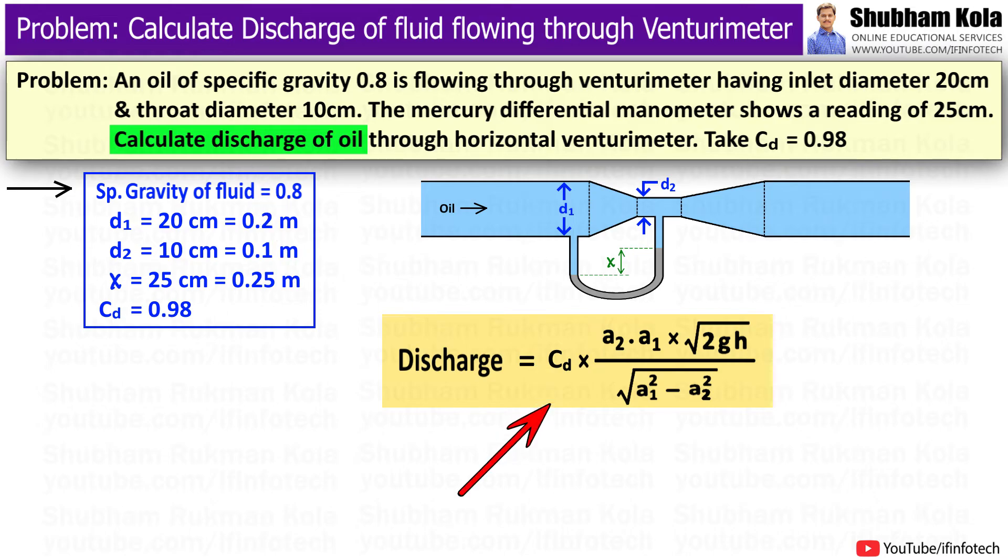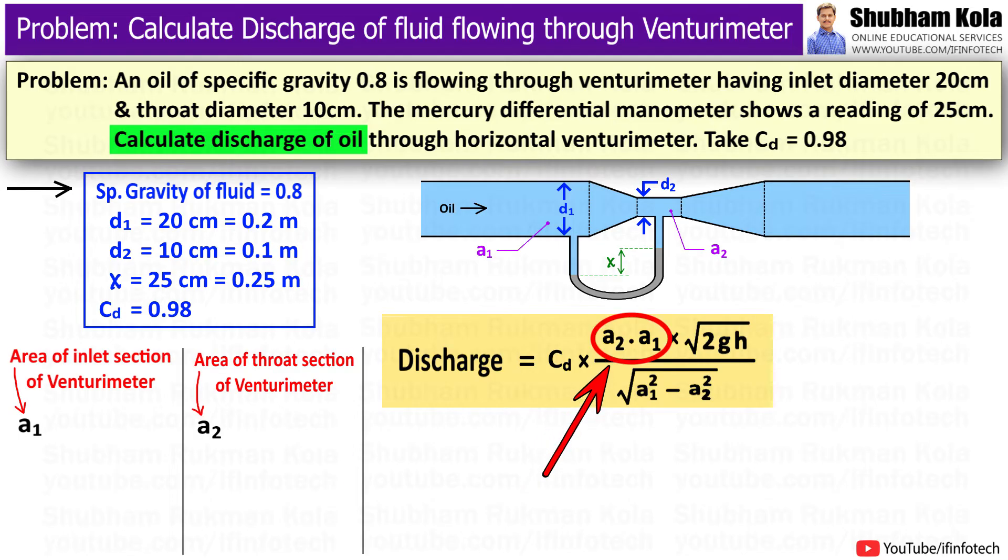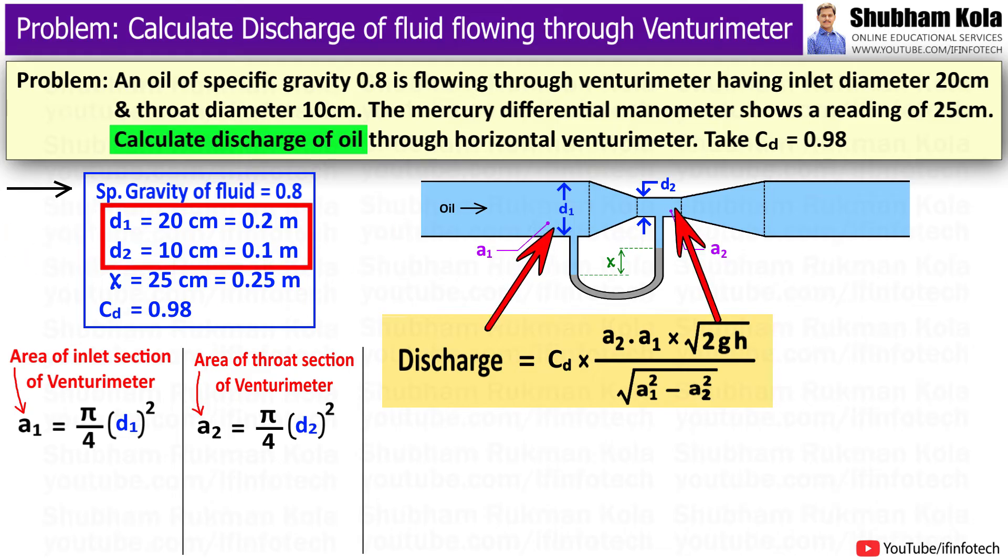In this formula, Cd is 0.98. A1 and A2 are the areas of inlet and throat section which we need to calculate. Area equals pi by 4 diameter square, and the values of diameters have been given in the problem.